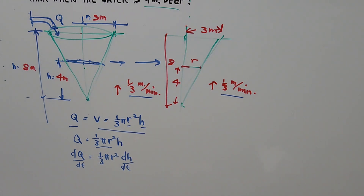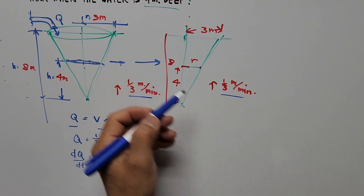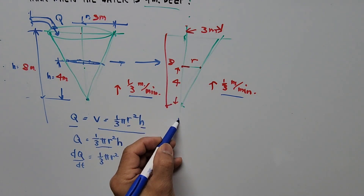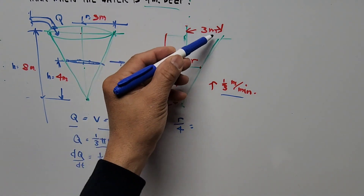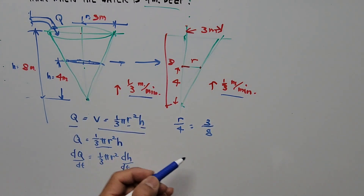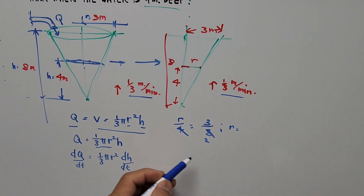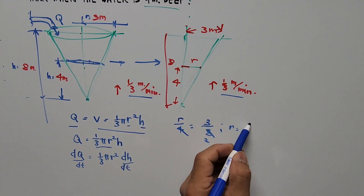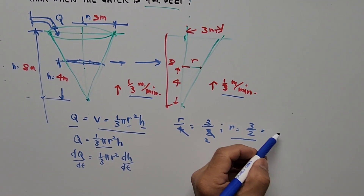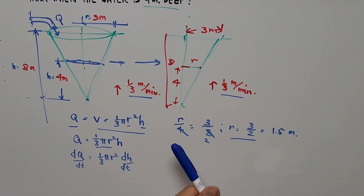By proportion: r is to 4 equals 3 is to 8. So r equals 3 halves, or 1.5 meters. That's the value of r when the height is 4 meters.